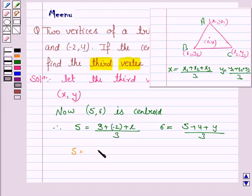(3 + (-2) + x)/3 and 6 equals (5 + 4 + y)/3.